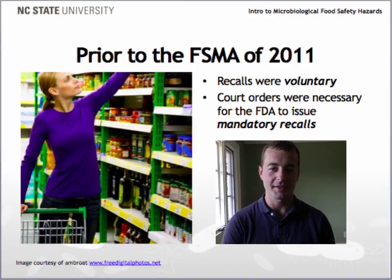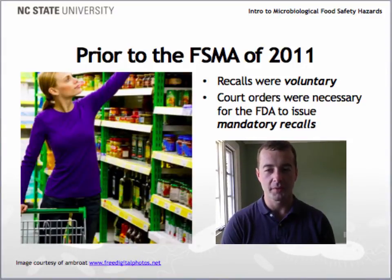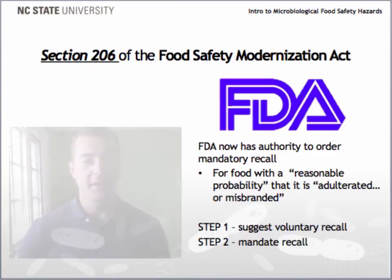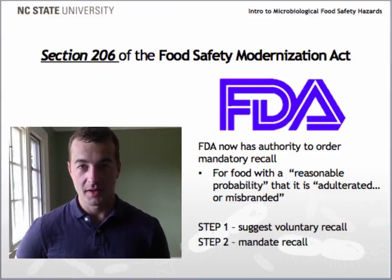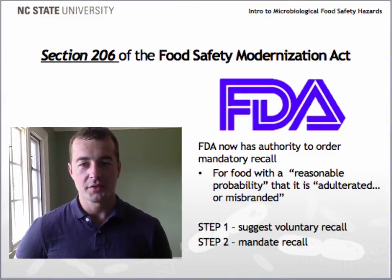Prior to the Food Safety Modernization Act of 2011, the FDA functioned just about the same as FSIS in terms of its recall authority. The FDA generally had to rely upon manufacturers' voluntary recall efforts or obtain a court order to remove contaminated or misbranded foods from the food supply, in the wake of a number of large-scale food contamination outbreaks and recalls.